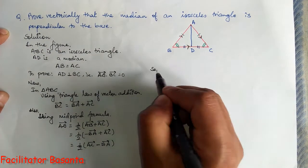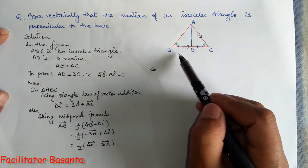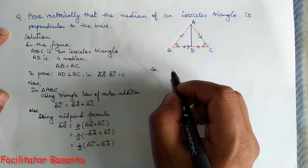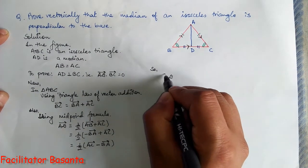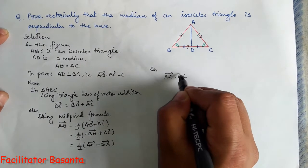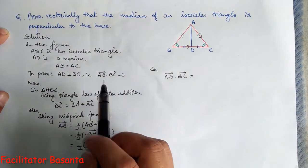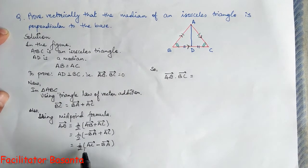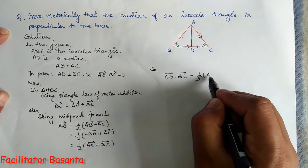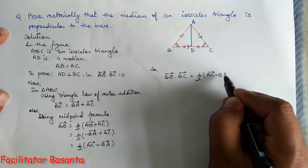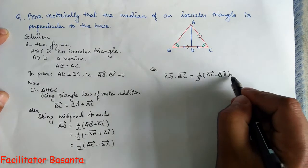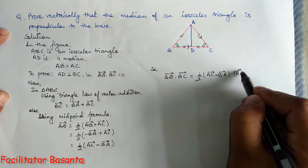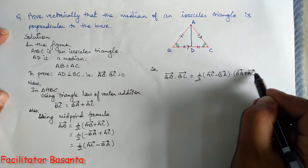We need to prove AD is perpendicular to BC, so we find the scalar product of AD vector and BC vector. AD vector dot BC vector equals one-half of AC vector minus BA vector, dotted with BA vector plus AC vector.